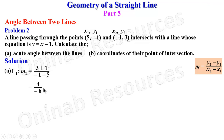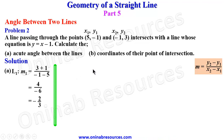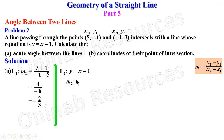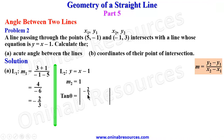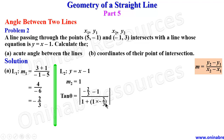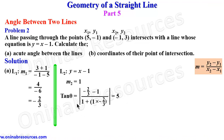Substituting: m1 equals 3 minus negative 1 over negative 1 minus 5, which gives 4 over negative 6, simplifying to negative 2 over 3. For the second line, y equals x minus 1, so m2 equals 1. Substituting into the acute angle formula: tan theta equals the absolute value of negative 2 over 3 minus 1, over 1 plus 1 times negative 2 over 3. Simplifying gives tan theta equals 5.